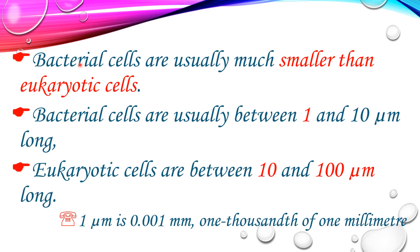Bacterial cells are usually much smaller than eukaryotic cells. Bacterial cells are prokaryotic, and their size usually ranges from 1 to 10 micrometres in diameter.